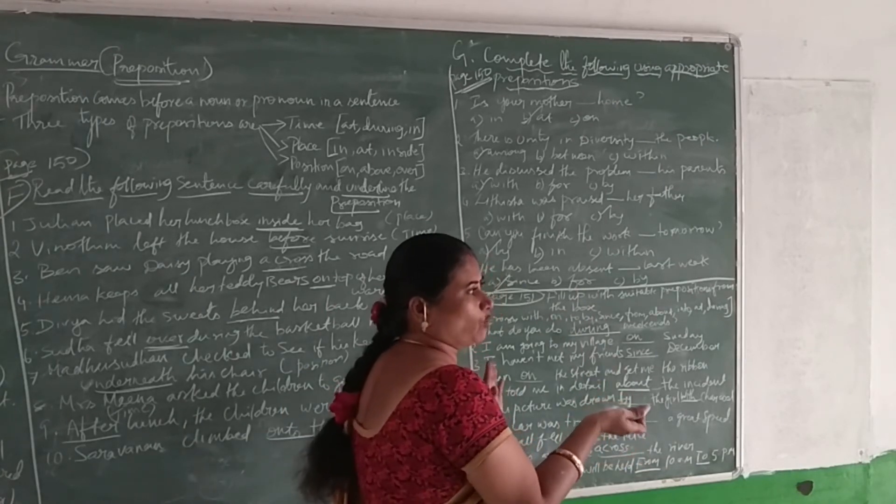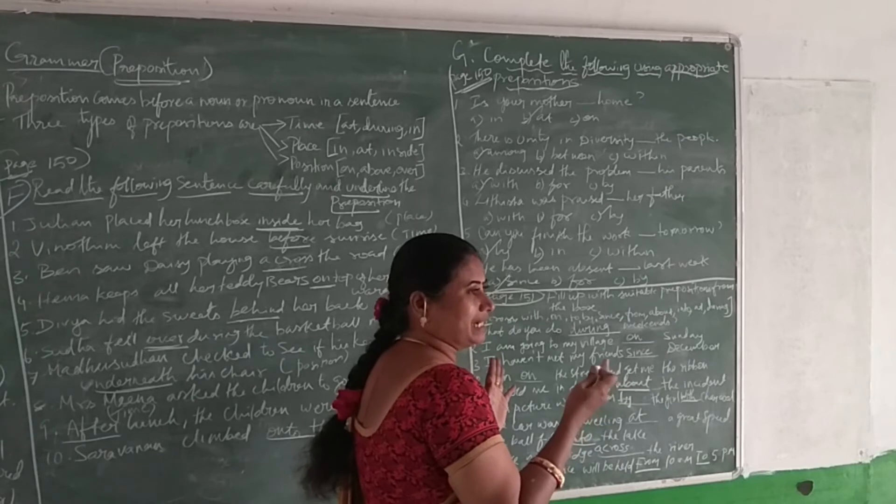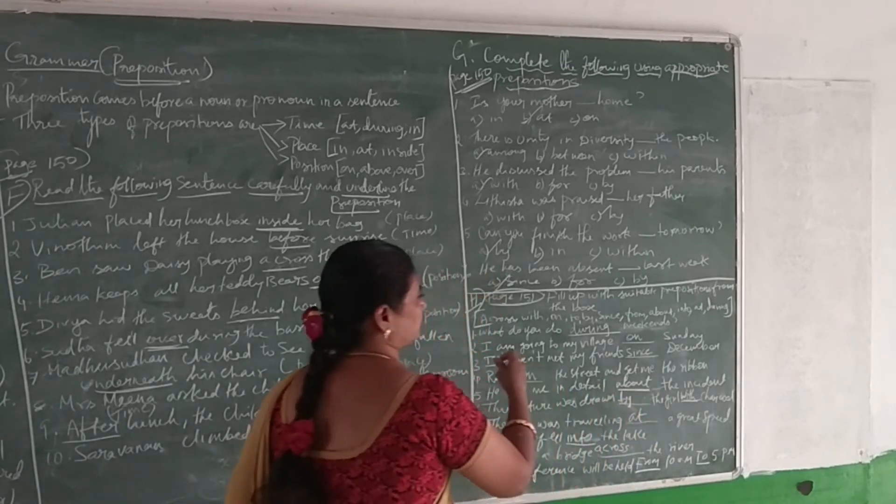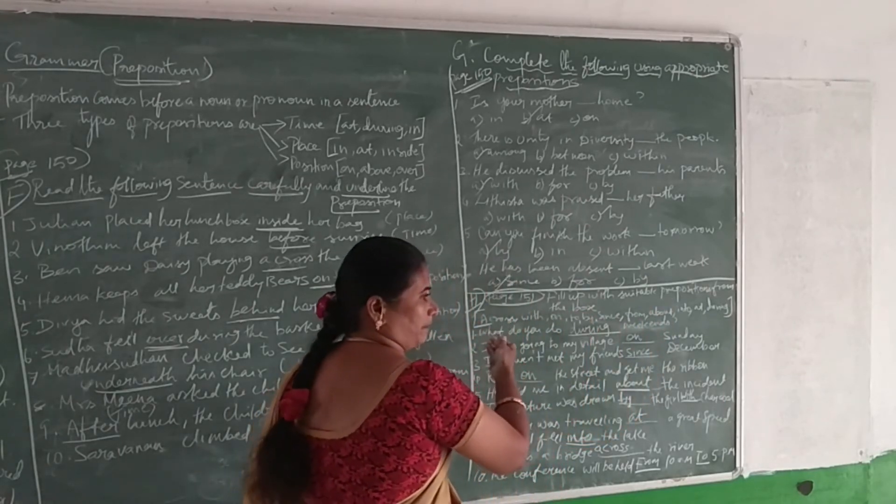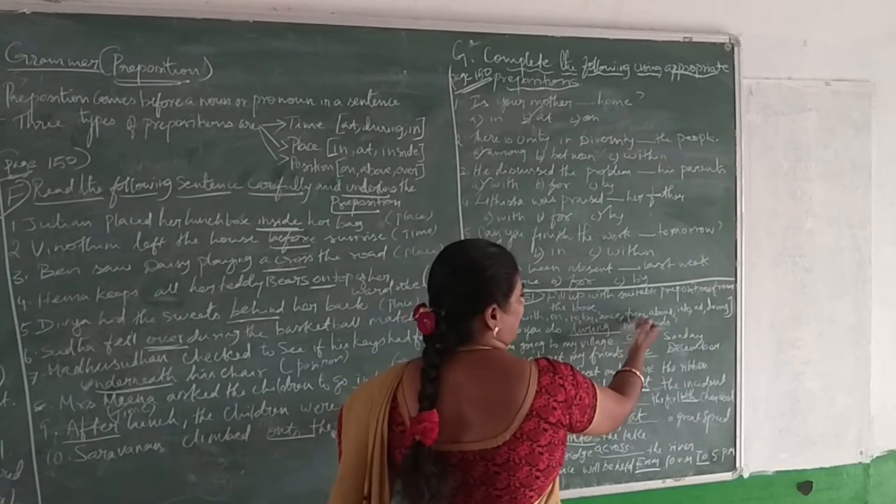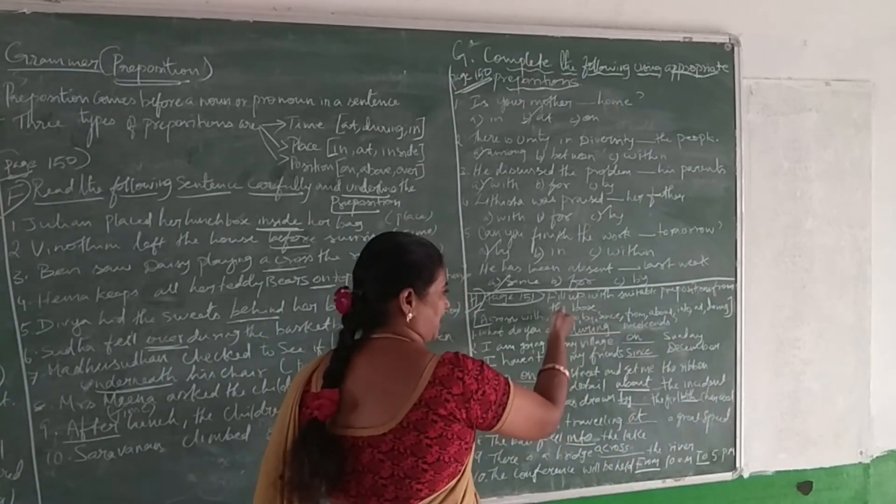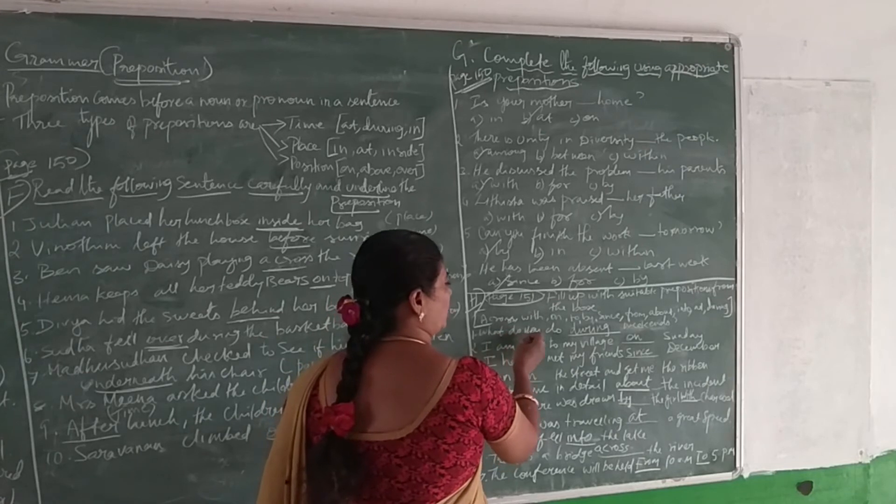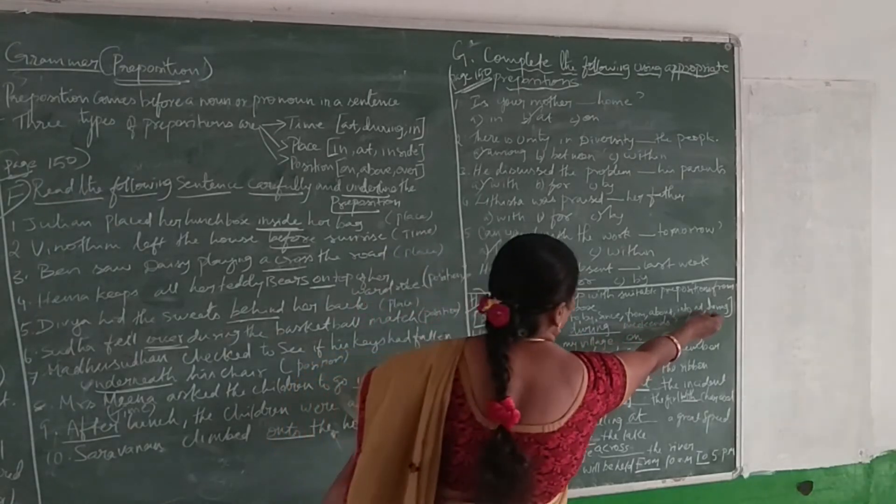Next: fill up with historical prepositions from the box. They have given a group of prepositions: across, would, at, to, by, six, from, above, into, at, during. From the given prepositions you want to fill up the given questions. First: 'What will you do during three days?' You want to select 'during'. Second: 'I am going to my clinic on Sunday.'